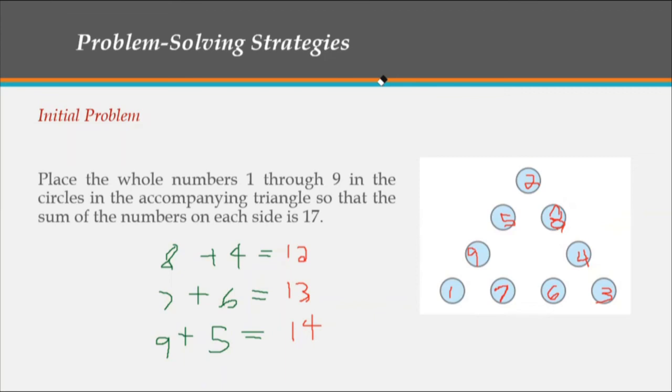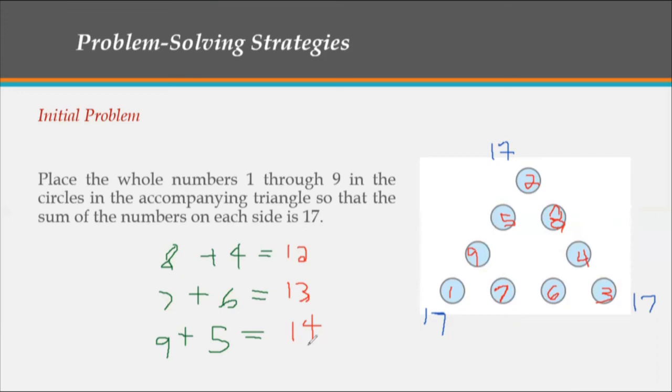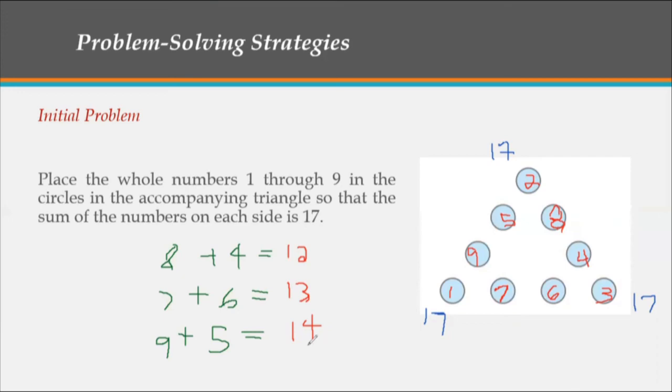Let's double-check: 1 plus 9 plus 5 plus 2 equals 17. Then the next side of the triangle: 2 plus 8 plus 4 plus 3 also equals 17. And the last or third side of the triangle: 1 plus 7 plus 6 plus 3 also equals 17. So we have completed the answer to our initial problem.